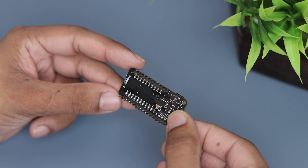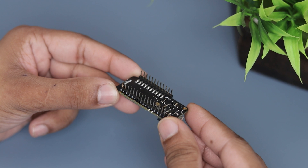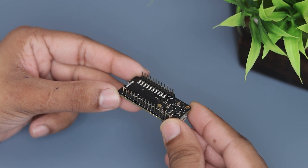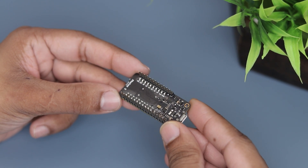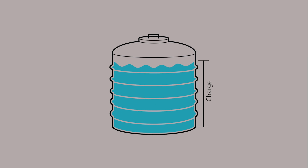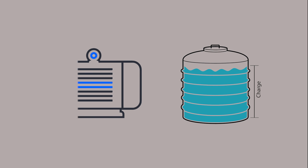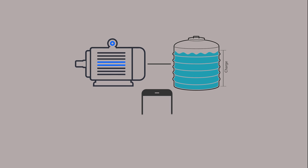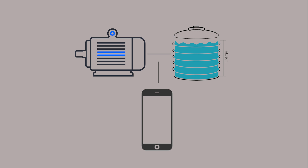Now let's create a project using this board. I am going to build a straightforward home automation project — a water tank level monitoring system. This system will monitor the water level of the tank and automatically control the water pump. You can monitor the system from your phone or computer.